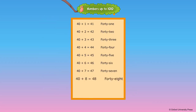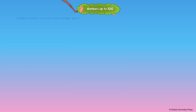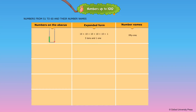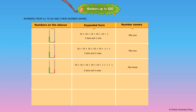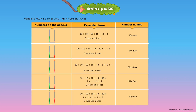Numbers from 51 to 60 and their number names. 5 tens and 1 one — the number name is written as 51. 5 tens and 2 ones — the number name is written as 52. 5 tens and 3 ones — the number name is written as 53. 5 tens and 4 ones — the number name is written as 54. 5 tens and 5 ones — the number name is written as 55.